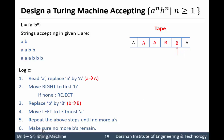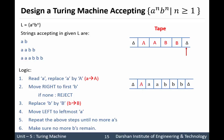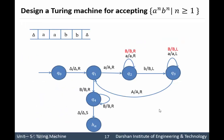The last step is to make sure no more small b's remain. The logic is: find the leftmost small a, convert it to capital A, search for the corresponding small b, convert it to capital B, and repeat. So find leftmost small a, convert to capital A, find corresponding small b, convert to capital B — again and again until all are replaced. Now let us implement this logic in diagram format.